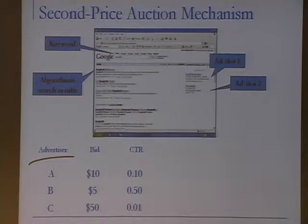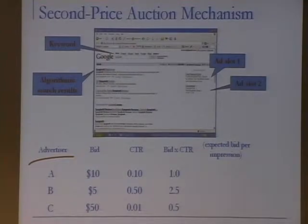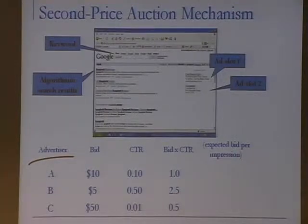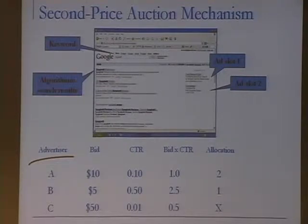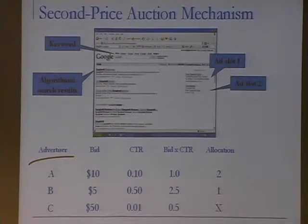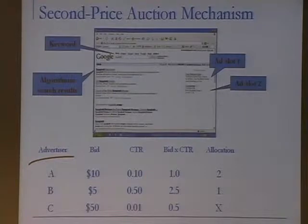The search engine multiplies bid times click-through rate for each advertiser to get the expected bid per impression — how much it's worth to the advertiser to be shown on the search page. It then allocates ad space in decreasing order of this expected bid per impression. In this example, advertiser B, who had the lowest bid per click, has the highest expected bid per impression and gets the first slot. A gets the second slot, and C is not shown.